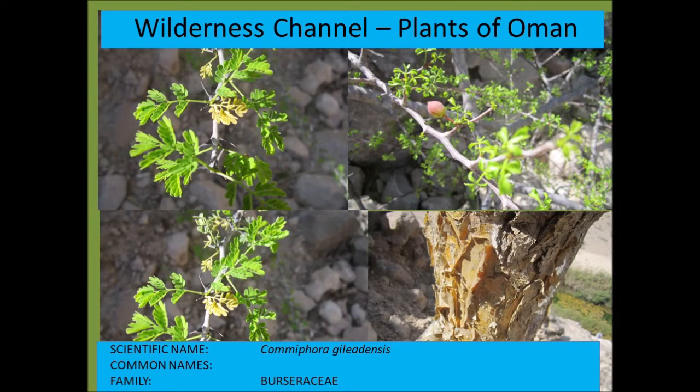Commiphora gileadensis is from the Burseraceae, or myrrh family. These include all the Commiphora species — sometimes called corkwood trees in southern Africa. They produce a resin similar to frankincense, and the ash of this tree is also used for making toothpaste.